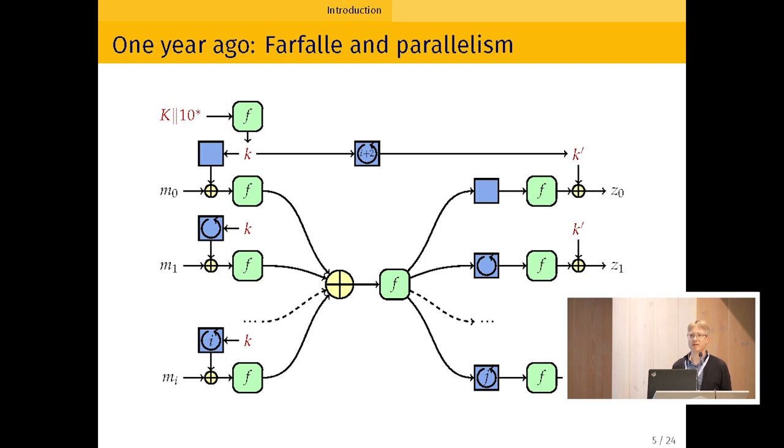So last year we proposed an instance of Farfalle using the Keccak permutation with 1600 bits, and the result was called Kravate. Well, 1600 bits, that's a bit too much for low-end devices. So one option would be to go to Keccak-p 400, but Keccak-p 400 uses 16-bit lanes, which is not very convenient on 32-bit platforms. So instead, our motivation was to try to have a permutation that fits nicely in this setting.